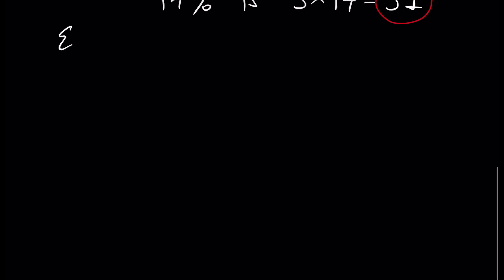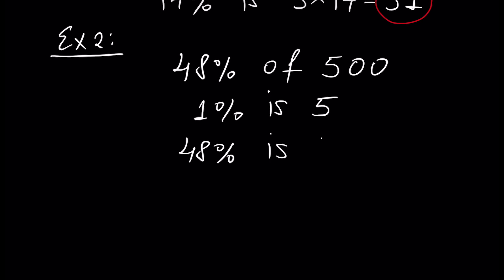Next, example 2: let's find 48% of 500. As in the previous example, 1% of this number is 5, and 48% is 5 times 48, which is 240. So 240 is 48% of 500.